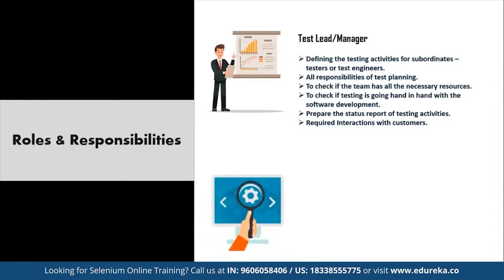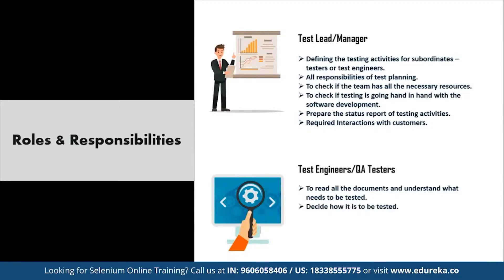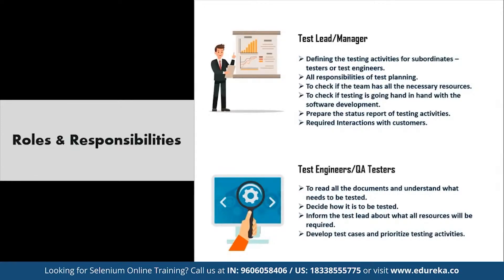The second level is the test engineers or QA testers. They are responsible for reading all documents and understanding what needs to be tested. Based on that, they decide how it is to be tested and inform the test lead about required resources. They then develop test cases, prioritize testing activities, execute all test cases, report defects, define severity and priority for each defect, and carry out regression testing every time changes are made to the code.